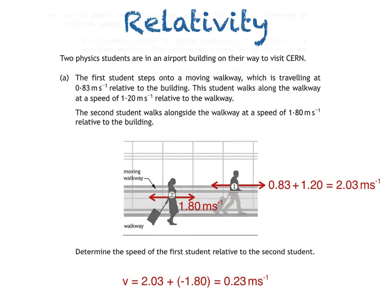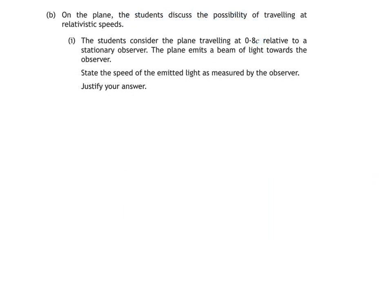Part B says: on the plane, the students discuss the possibility of travelling at relativistic speeds. The students consider the plane travelling at 0.8c relative to a stationary observer. The plane emits a beam of light towards the observer. We're then asked to state the speed of the emitted light as measured by the observer and to justify our answer. This question catches a lot of people out — you might think that a stationary observer would measure a greater speed: the speed of light plus the speed of the plane. This isn't the case though.